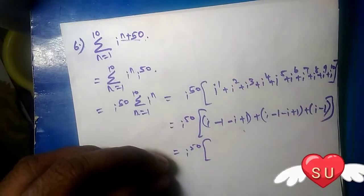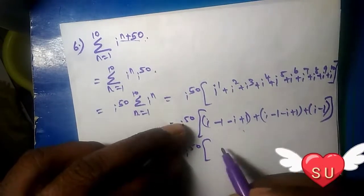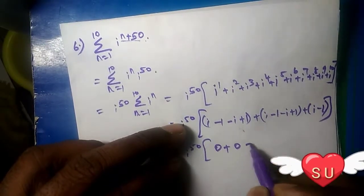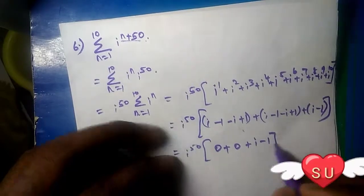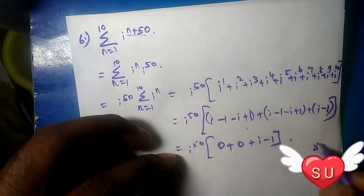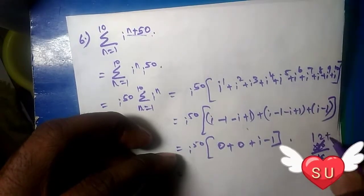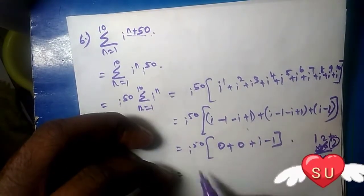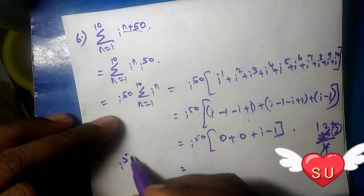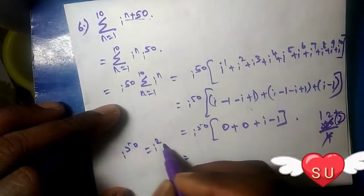The value is 0 + 0 + i - 1. Now for i^50: when we divide 50 by 4, we get remainder 2. So i^50 equals i^2, which equals -1.